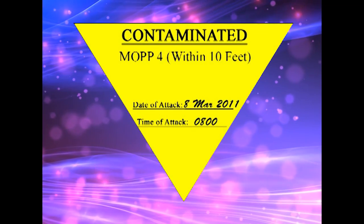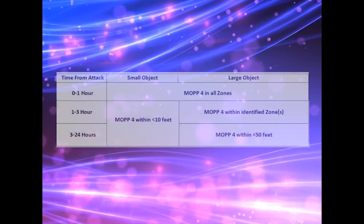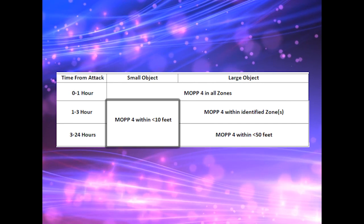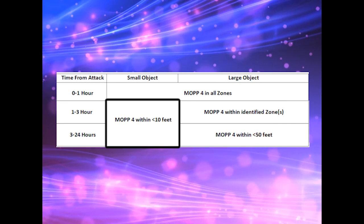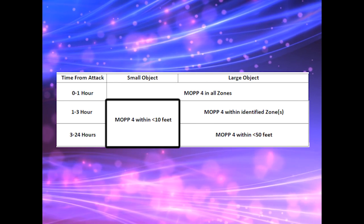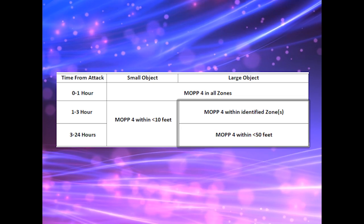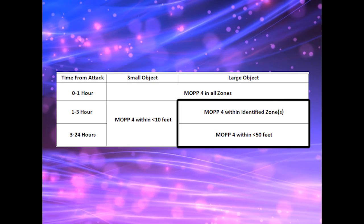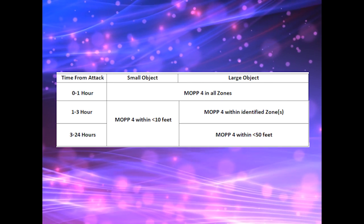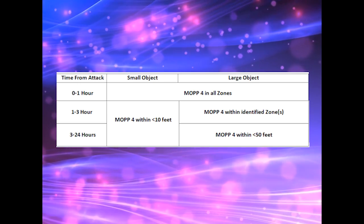Items should be marked and visible from all sides of the contaminated asset. The easiest way to understand and apply CCOR is to remember that within 24 hours after an attack, if the object is smaller than a bus, then MOP 4 must be worn within 10 feet. If the object is larger than a bus, then MOP 4 must be worn within 50 feet. Once 24 hours after an attack have passed, individuals must wear gloves at all times when dealing with objects or vehicles that were once contaminated.